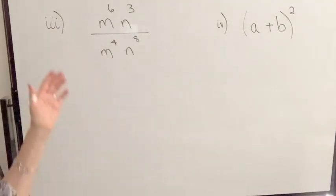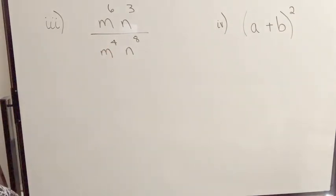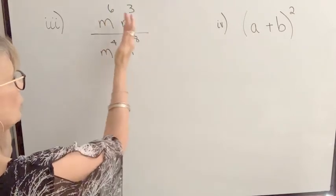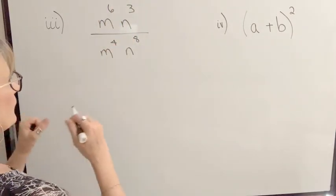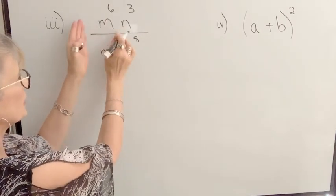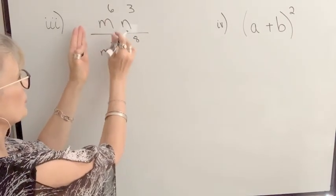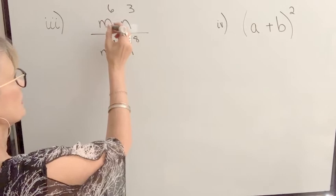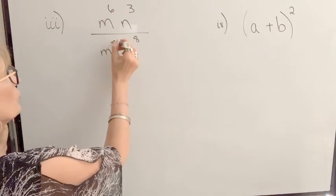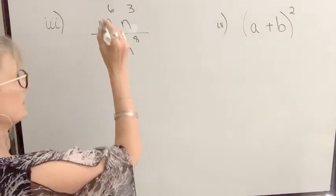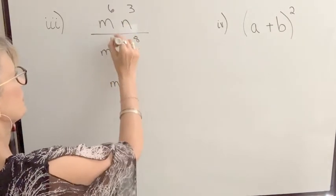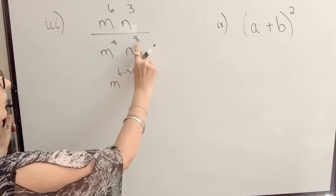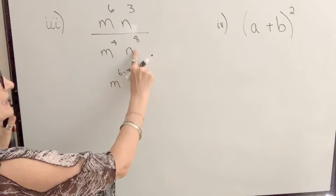Our next example is something that you might encounter, and what I want to do is sort of treat these separate, it's all multiplication, but we can break it up and it's still correct. So I'm going to deal with the m's, six is greater than four, so my m power stays in the numerator, so that'll be m to the sixth minus four.